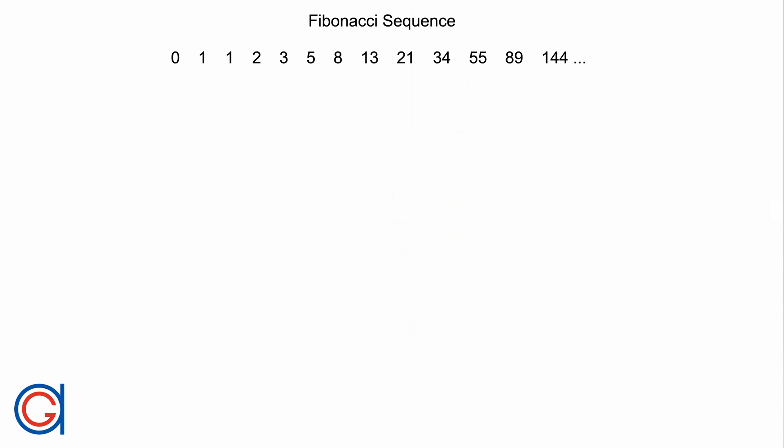Hello, today we are going to learn how to draw a Fibonacci spiral, which is very similar to the golden spiral but not exactly the same. We are going to construct this spiral using the Fibonacci sequence of numbers, which can be seen here on the top of the screen, in which each number in the series is the sum of the two preceding ones, starting from 0 and 1.